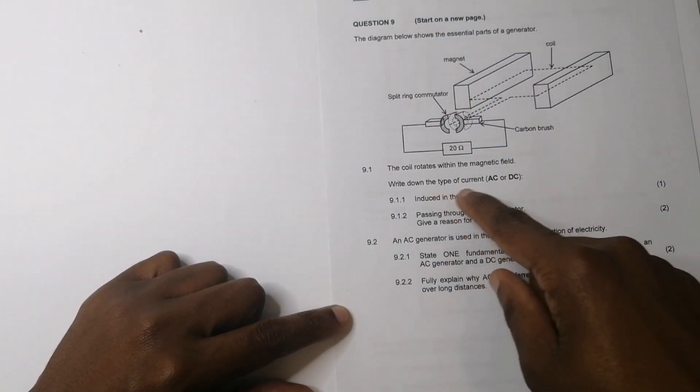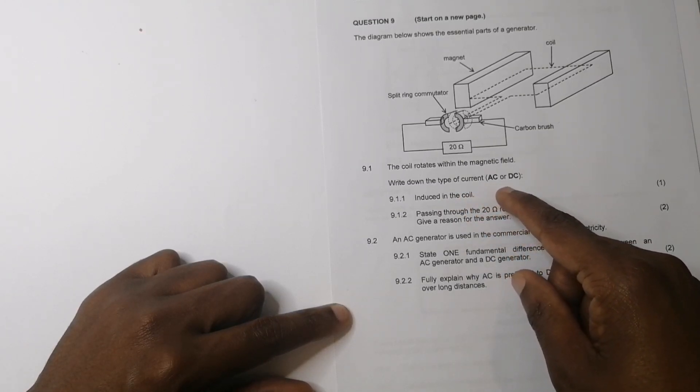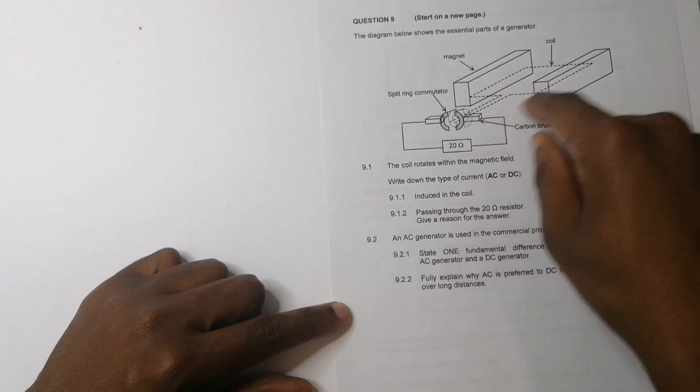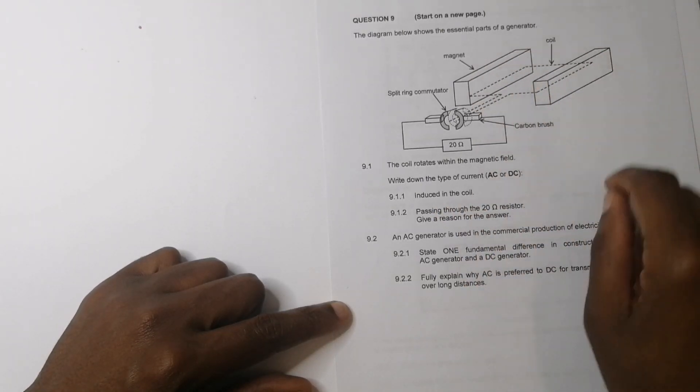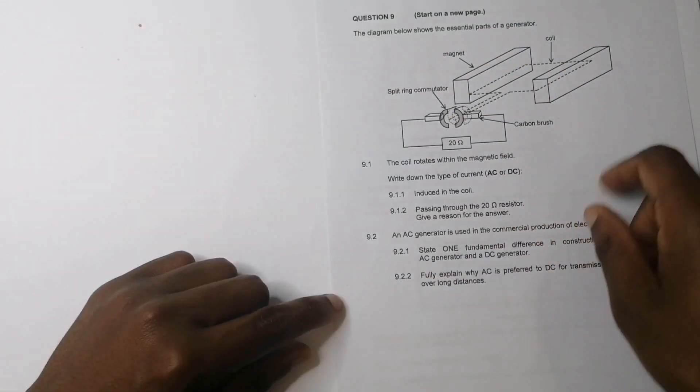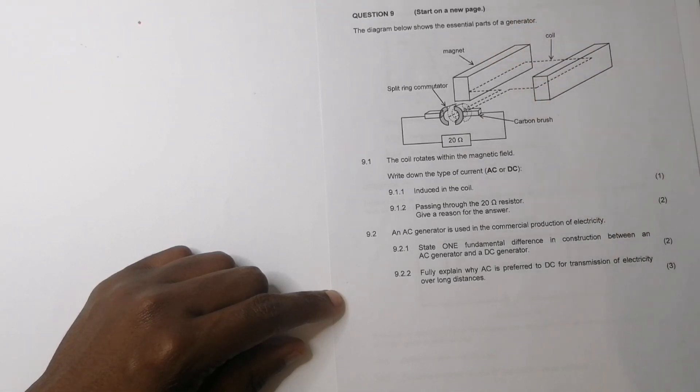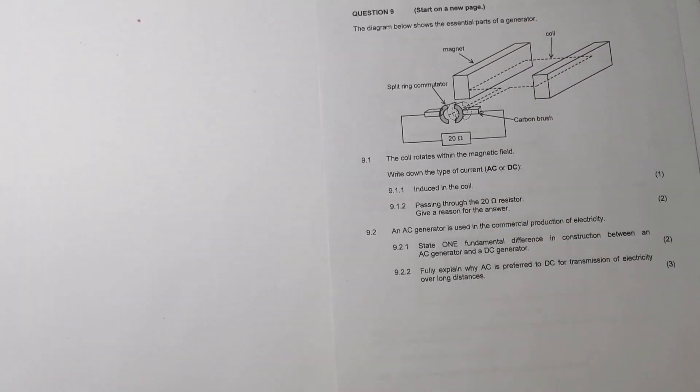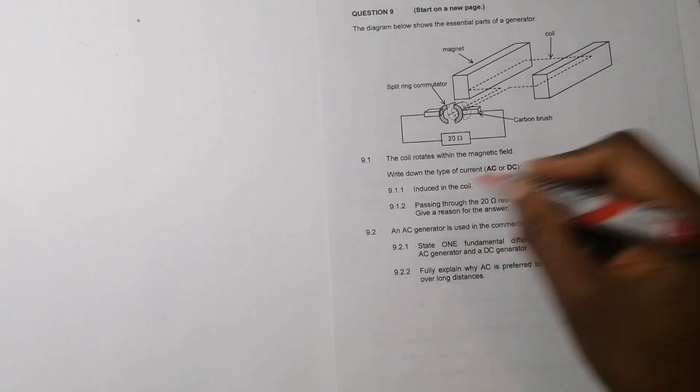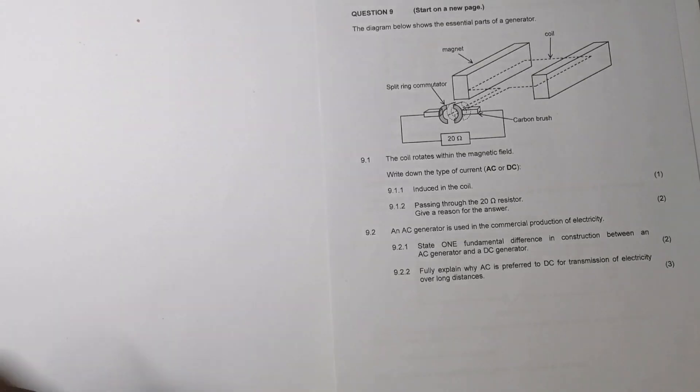So we know this is a generator. And by the way, you can tell because we've got those split ring commutators. We know that it would turn in half cycles. They say write down the type of current AC or DC induced in the coil.